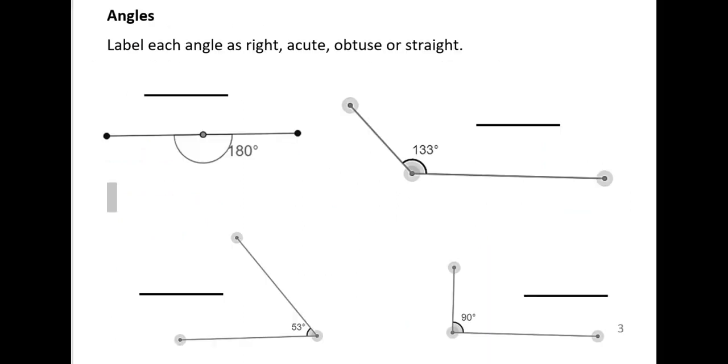And lastly, we'll review the different types of angles. The directions say label each angle as right, acute, obtuse, or straight.